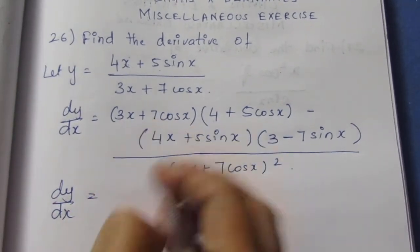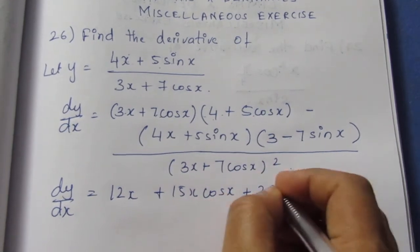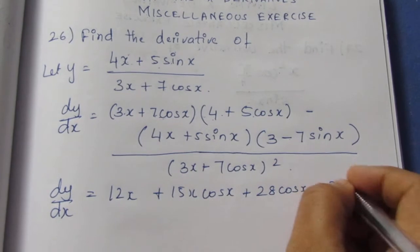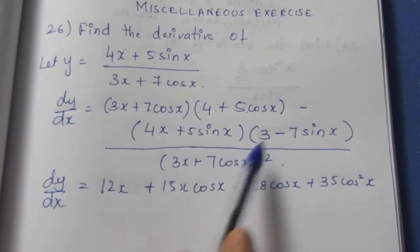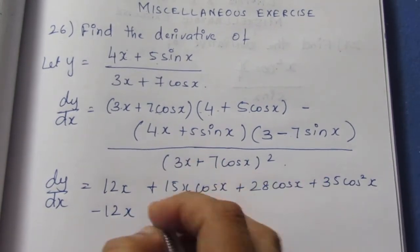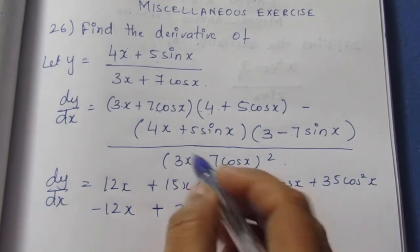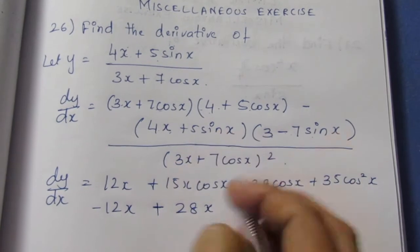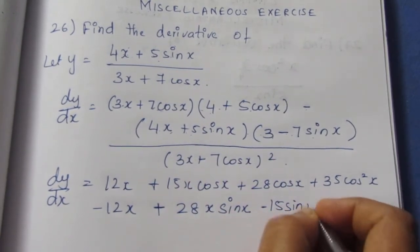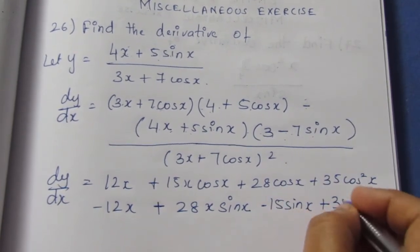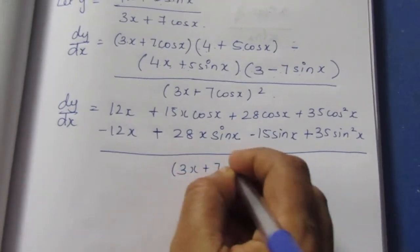So dy/dx: we expand to get 12x·cosx plus 15x·cos x plus 28cosx plus 35cos²x, minus 12x minus 28x·sinx, plus 15sinx minus 35sin²x, all over the denominator square, which is (3x + 7cosx)².